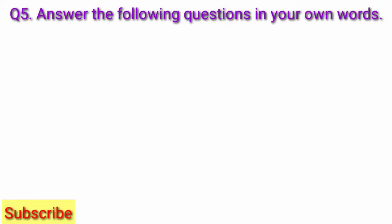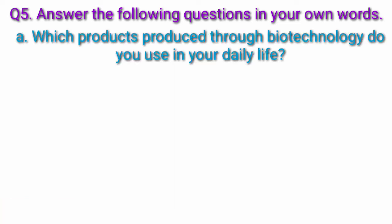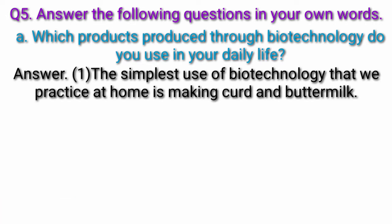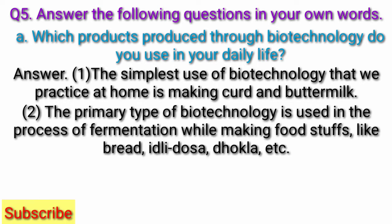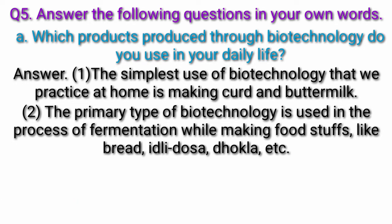Question 5: Answer the following questions in your own words. A. Which products produced through biotechnology do you use in your daily life? Answer: The simplest use of biotechnology that we practice at home is making curd and buttermilk. The primary type of biotechnology is used in the process of fermentation while making foodstuffs like bread, idli, dosa, dhokla etc.